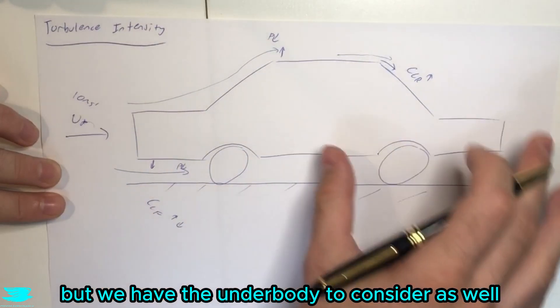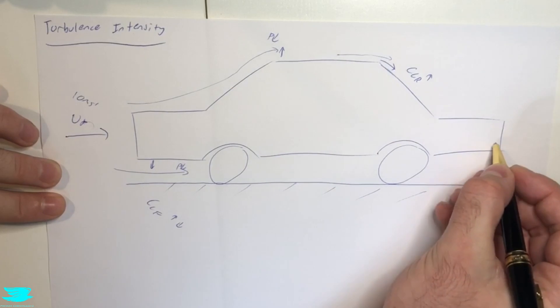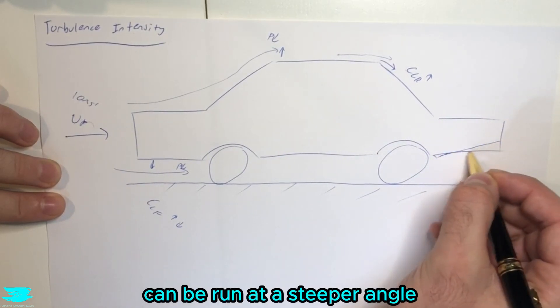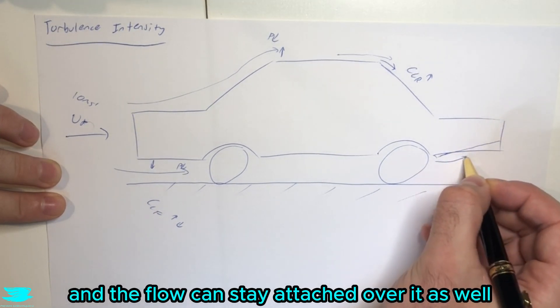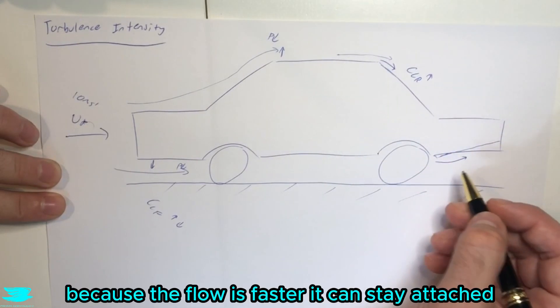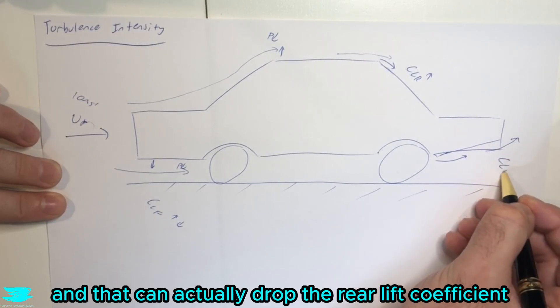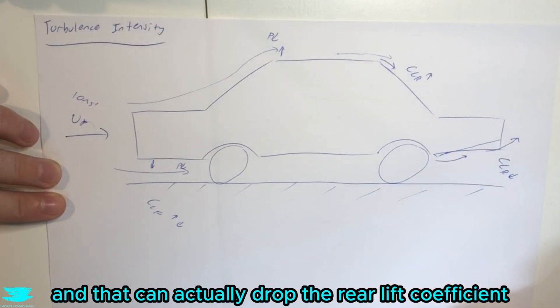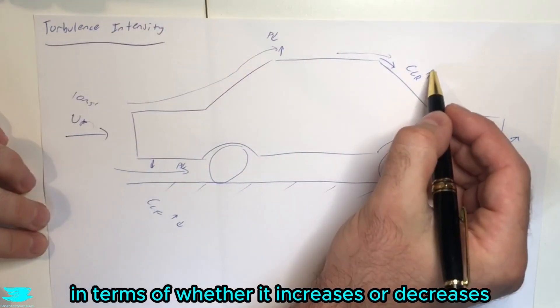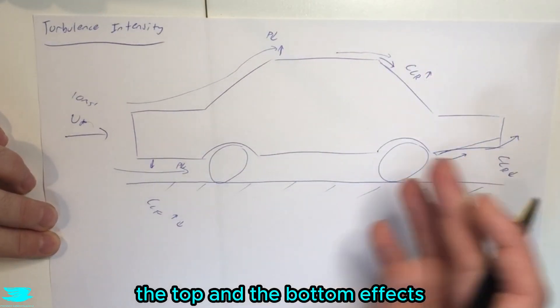But we have the underbody to consider as well. So because we have fast moving flow underneath, it means that the diffuser will also can be run at a steeper angle, and the flow can stay attached over it as well. So we have the exact same mechanism happening here underneath as well, because the flow is faster, it can stay attached. That means the flow can be kicked up more, and that can actually drop the rear lift coefficient. And again, depending on what happens in terms of whether it increases or decreases, really is decided by this tug of war between the top and the bottom effects.